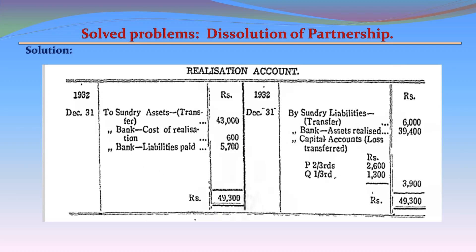Realization Account summary. Debit side: To Sundry Assets transferred 43,000; To Bank — cost of realization 600; To Bank — liabilities paid 5,700; Total debits 49,300. Credit side: By Sundry Liabilities transferred 6,000; By Bank — assets realized 39,400; By Capital Accounts — loss transferred: P 2,600, Q 1,300, total 3,900. Total credits 49,300. The realization account balances.